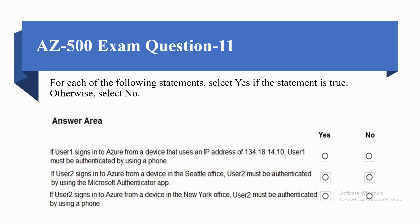For each of the following statements, select Yes if the statement is true, otherwise select No. First: if User 1 signs in to Azure from a device that uses an IP address of 134.18.14.10, User 1 must be authenticated by using a phone. Second: if User 2 signs in to Azure from a device in the Seattle office, User 2 must be authenticated by using Microsoft Authenticator app. Third: if User 2 signs in to Azure from a device in the New York office, User 2 must be authenticated by using a phone.